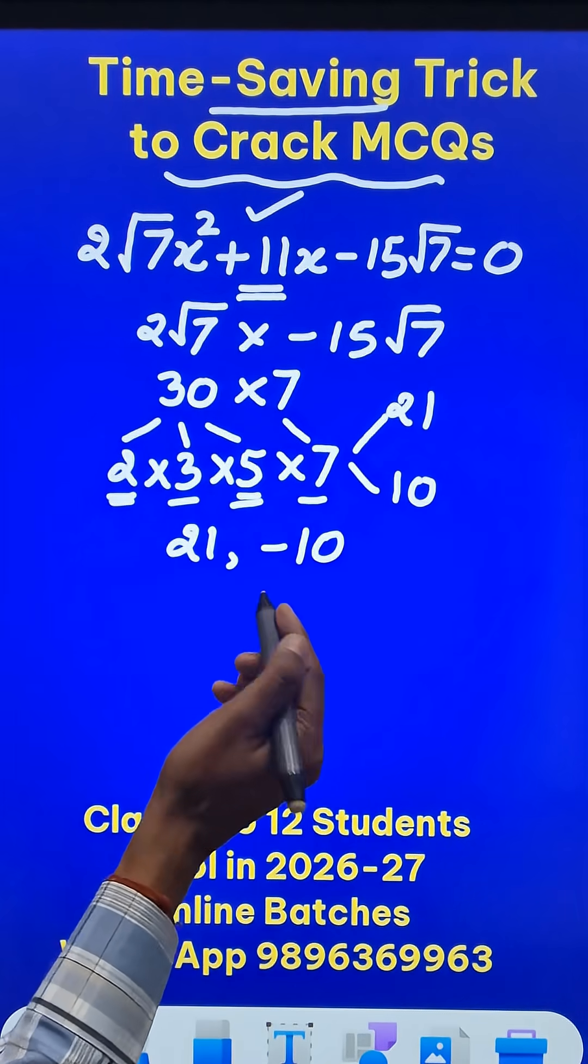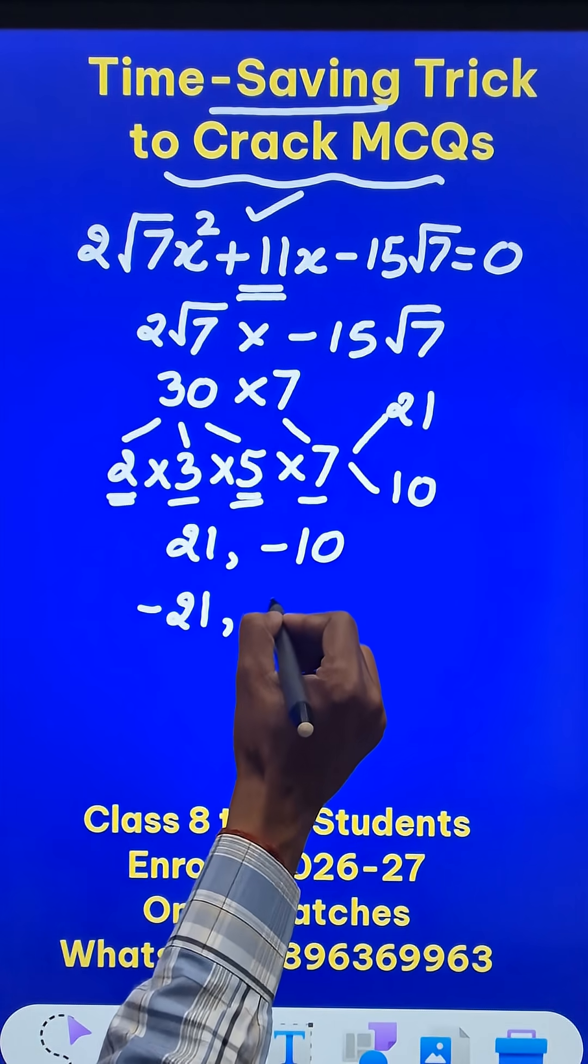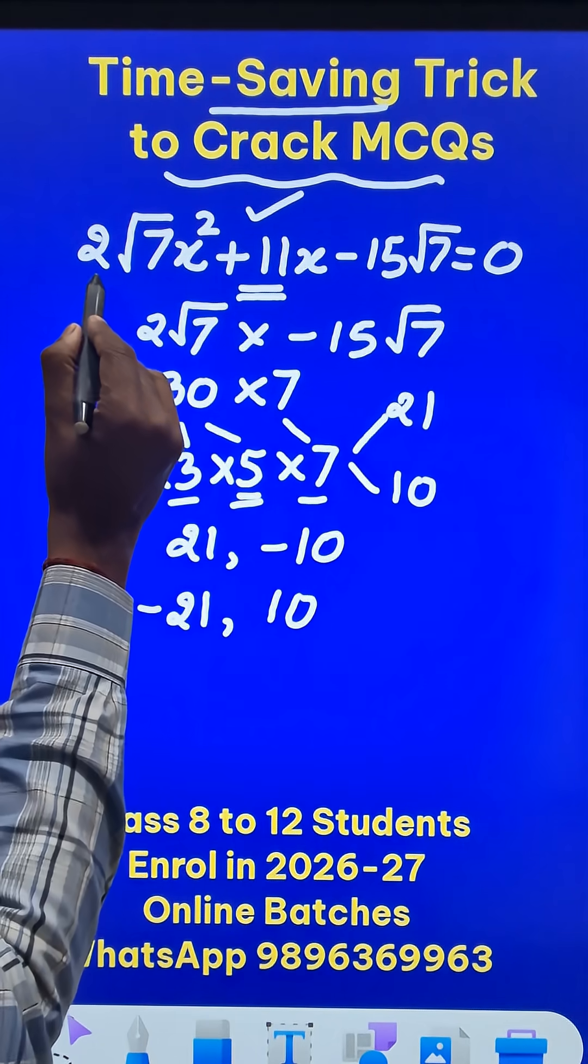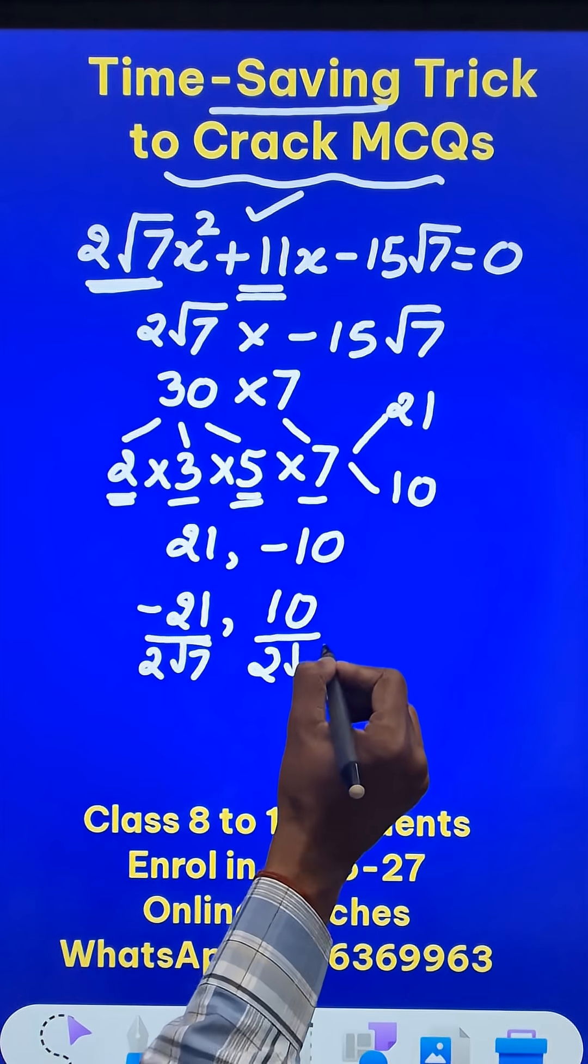Now what you have to do is to change the sign of these two factors. 21 becomes negative 21 and minus 10 becomes plus 10. Now look at the coefficient of x² here, 2√7, just write 2√7 here and 2√7 here in the denominators.